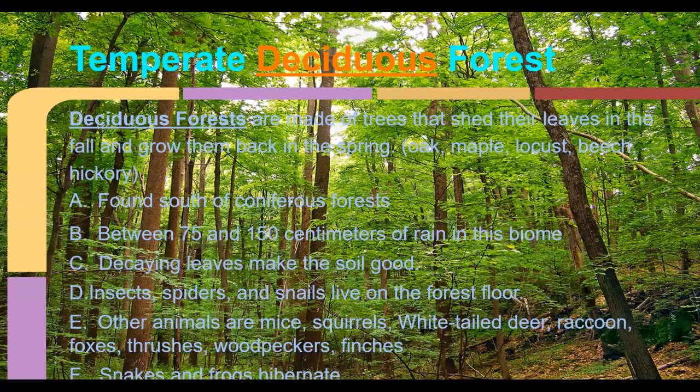Most deciduous forests get between 75 and 150 centimeters of rain — 150 centimeters is about four to four and a half feet. When the leaves fall in the fall, they decompose and give really fertile soil. The deciduous forest has the second best soil, compared to the grassland which has the best; the rainforest actually has the worst.